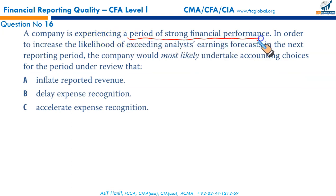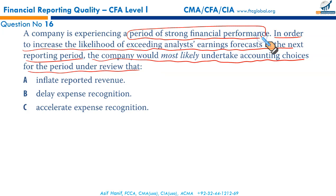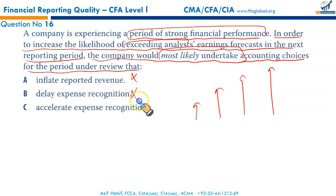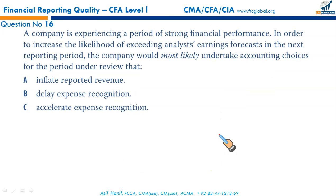A company experiencing strong financial performance wants to increase the likelihood of exceeding analyst earnings forecasts in the next reporting period. What accounting choices would management most likely make? Inflating revenue — no, things are already good. Delaying expense recognition would make current results even better — not needed. Management would accelerate expense recognition — charge more expenses now to show lower earnings currently, but in the future, when the effect reverses, performance will be better. C is the correct option.